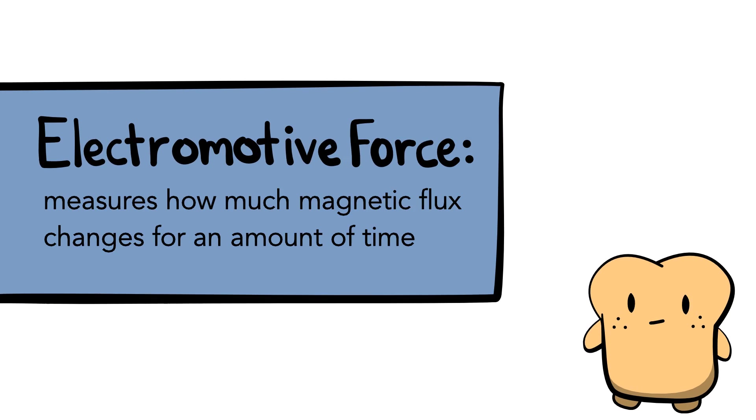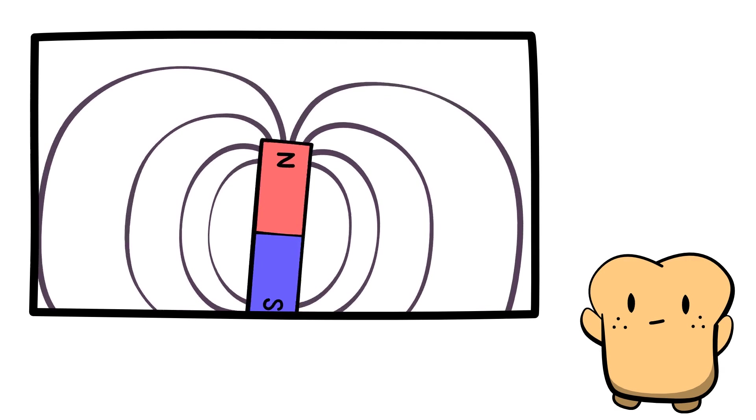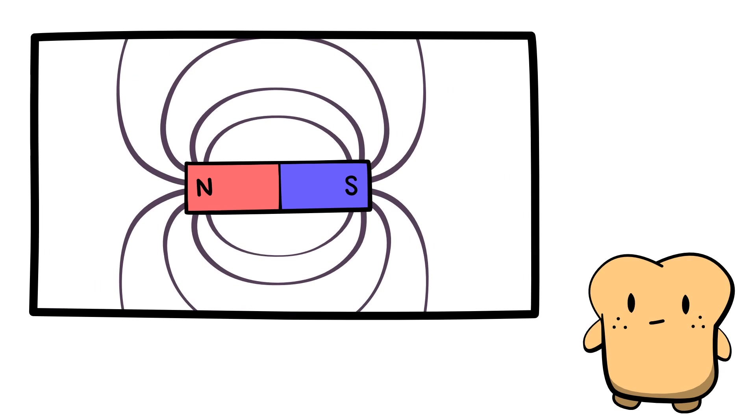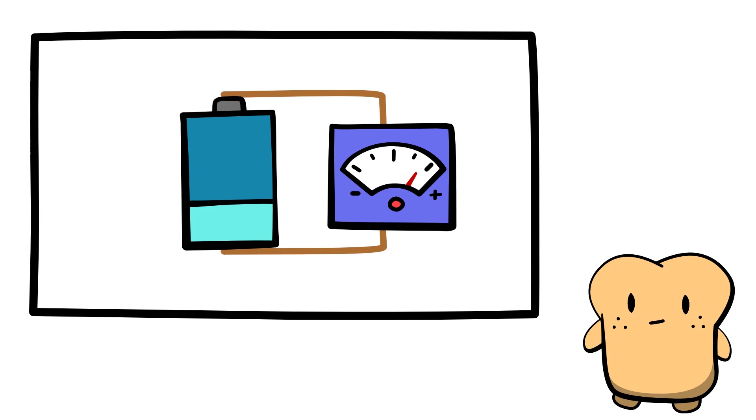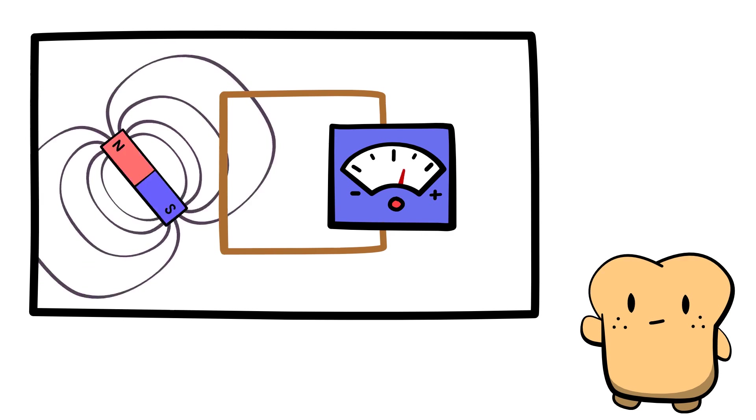Since EMF is produced whenever a magnetic field changes, EMF is also a measure of how much the magnetic flux changes for a certain amount of time. A greater change means more EMF, and no change means no EMF. This means that the same voltage that lets a battery move charges around in a wire is the same voltage that a changing magnetic flux produces.